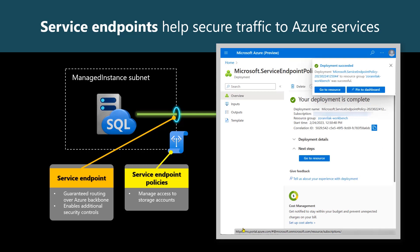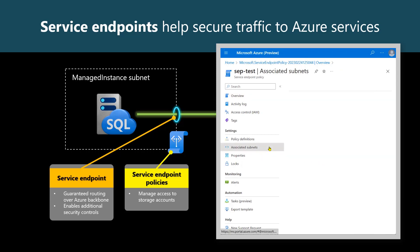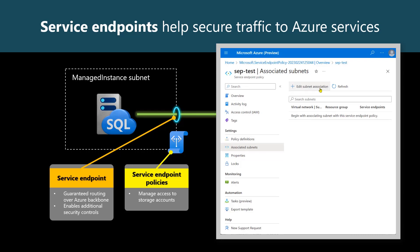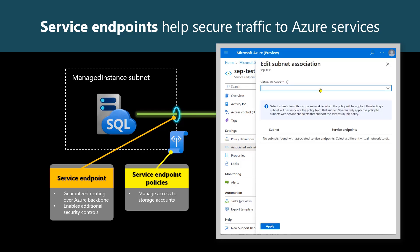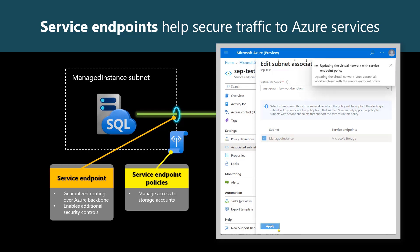Here's our service endpoint policy. We can associate it now with our managed instance's subnet. In Associated Subnets, we choose Edit Subnet Association, and add the virtual network and the subnet where our managed instance resides. Hit Apply, and that's it.